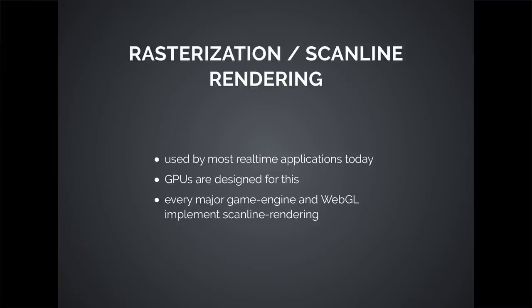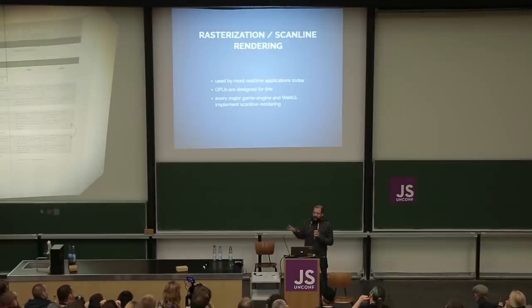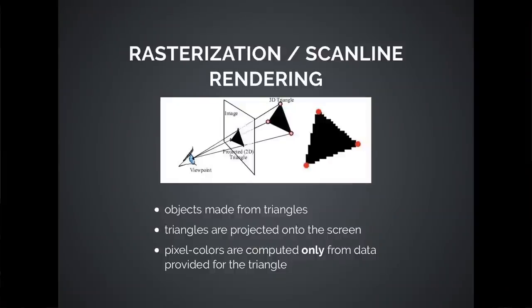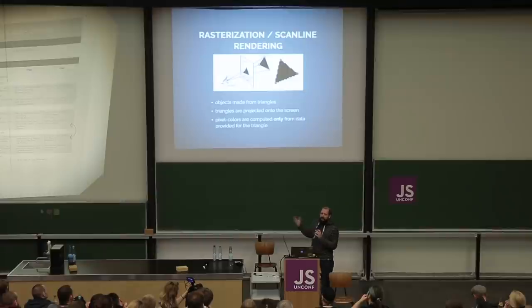The main technique used for real-time rendering is called rasterization, together with scan-line rendering as an accompanying technique. Basically all applications — like games or anything that does 3D graphics in real time — use this technique. GPUs are specifically designed for this rasterization technique. What rasterization does is take objects described as a huge number of triangles, split each triangle up according to which screen pixels are covered by it, and then calculate a color for every pixel from the data available for that triangle.